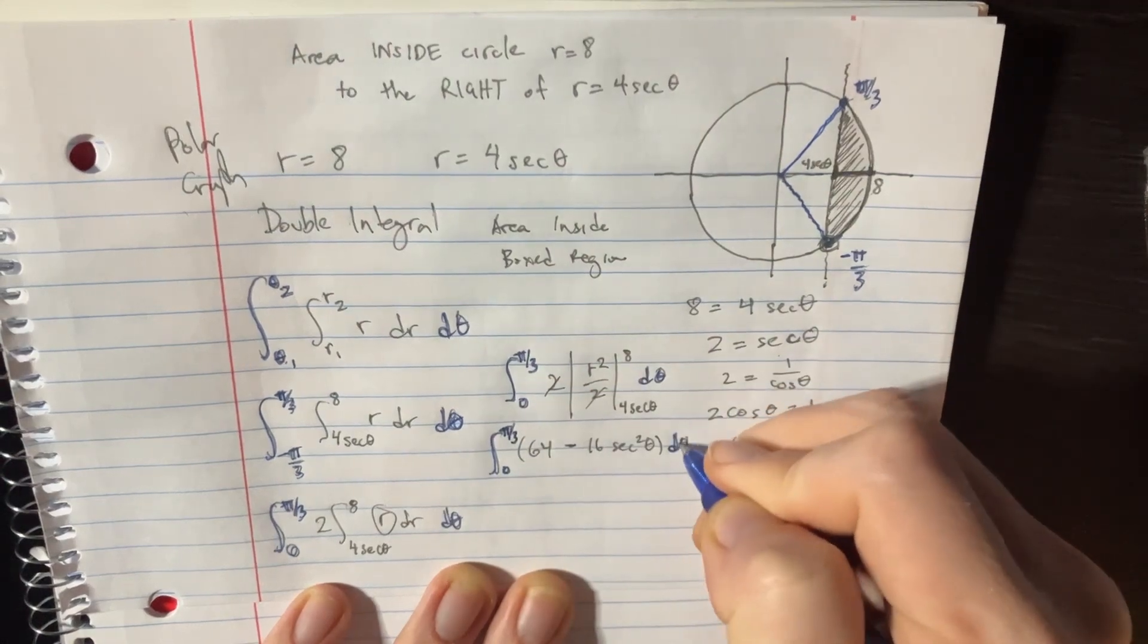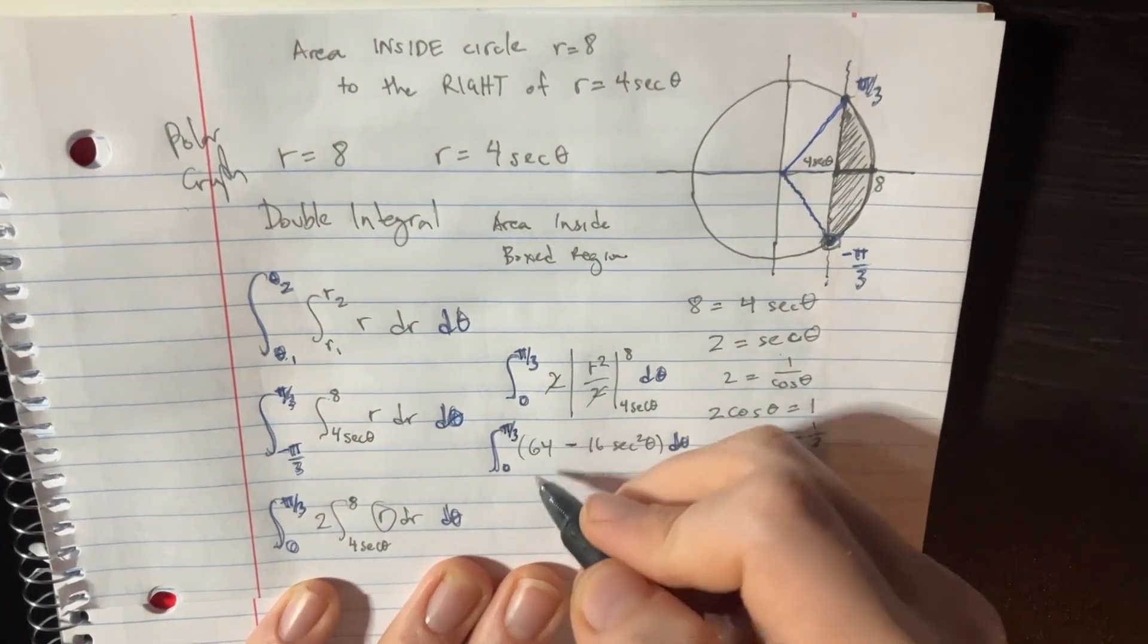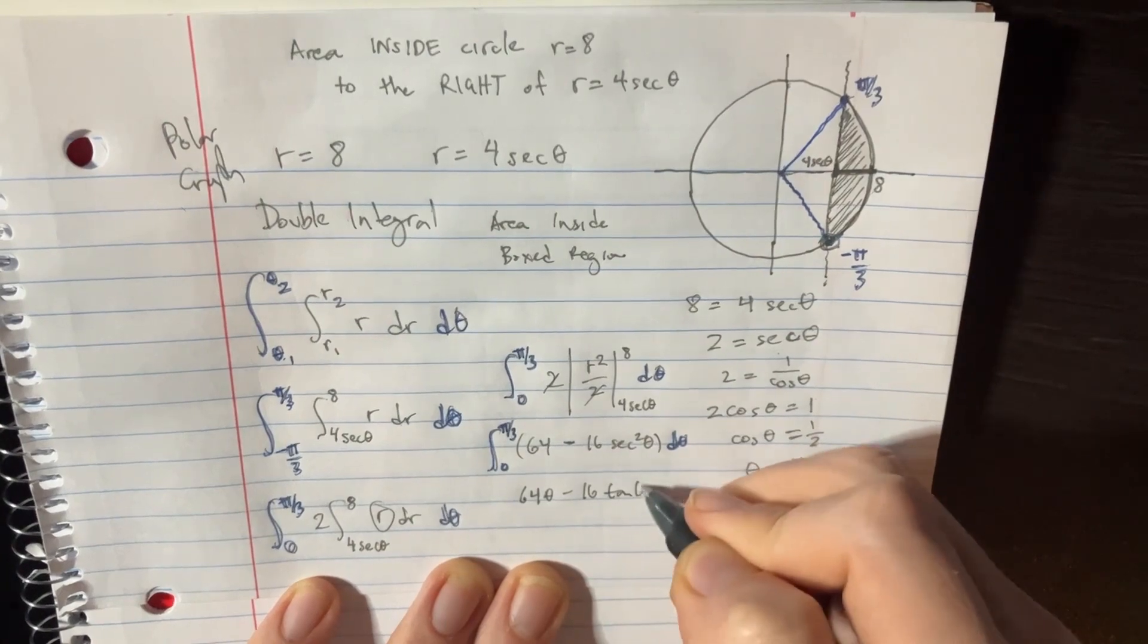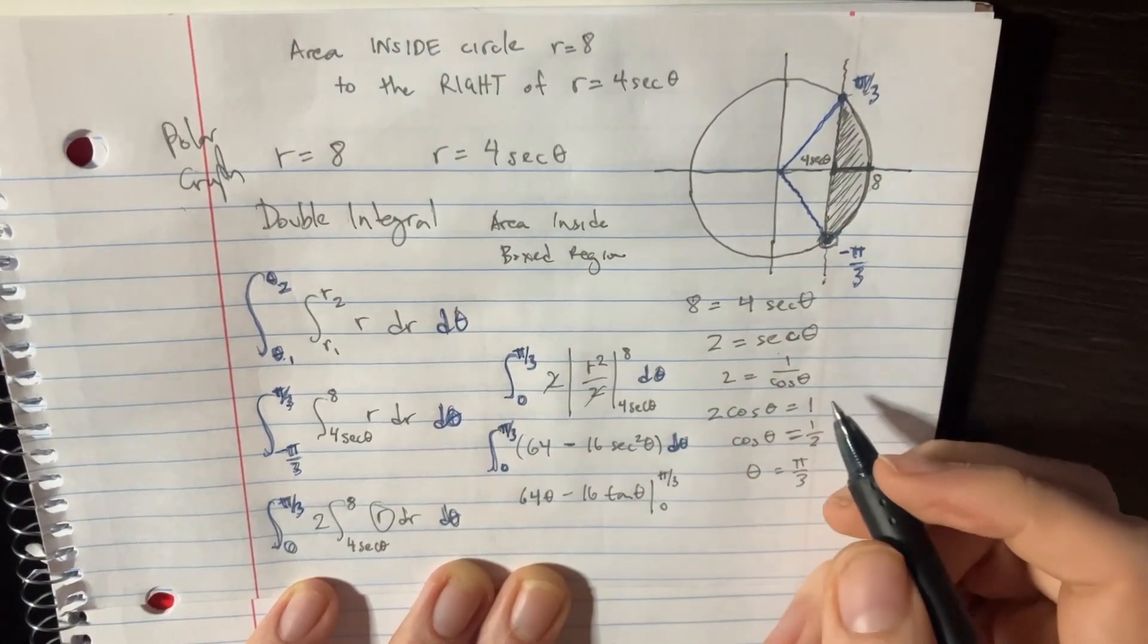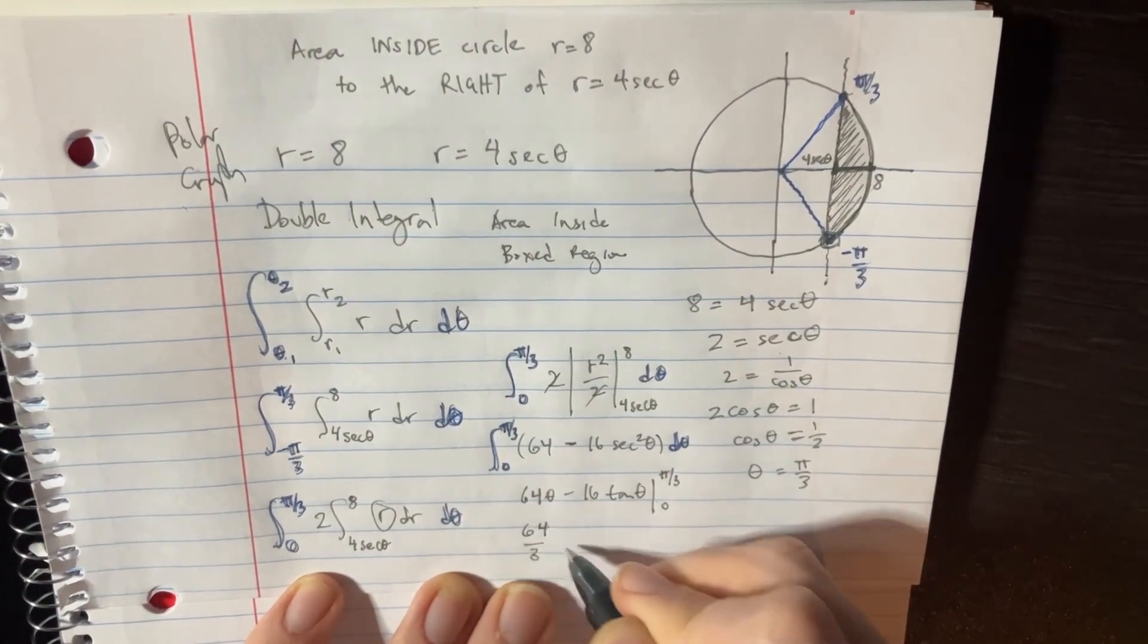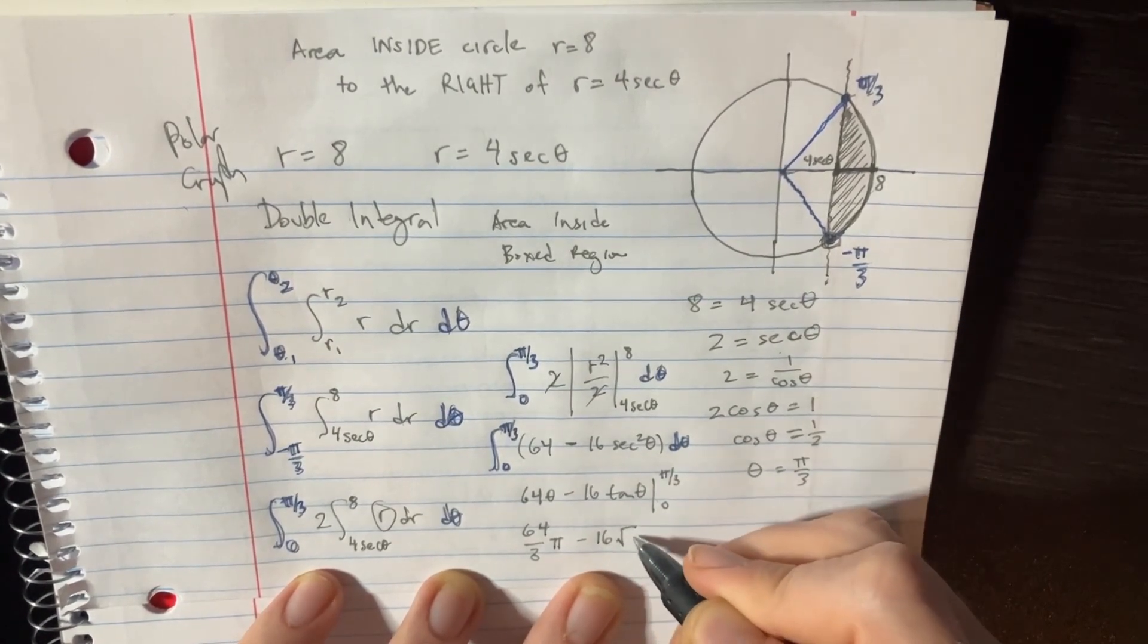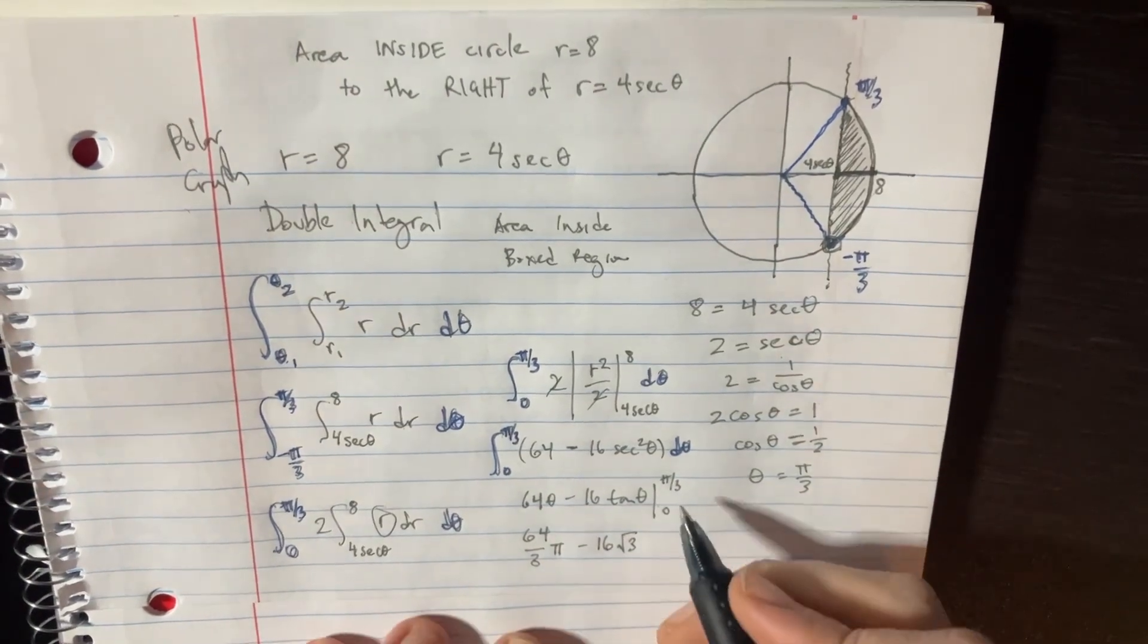So we found that, and now really easy at this point, we're just going to do 64 theta minus 16 tan theta, 0 to pi over 3. And when we solve this, we're going to end up getting 64 over 3 pi minus 16 the square root of 3, I believe.